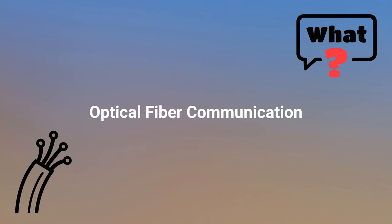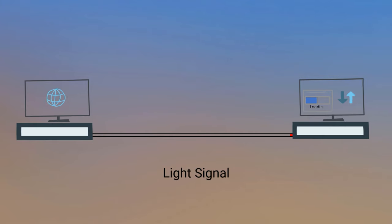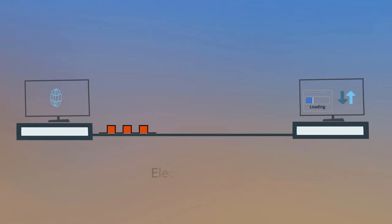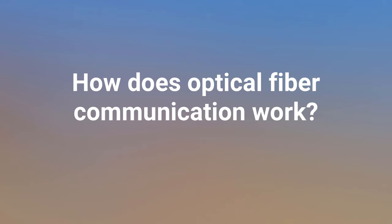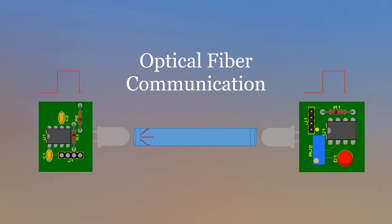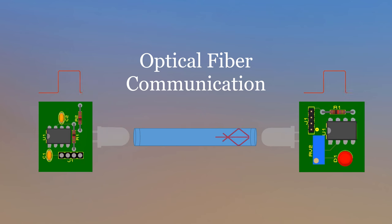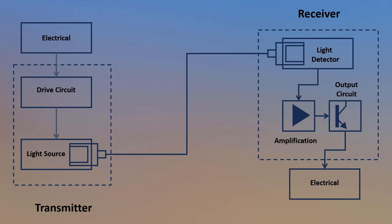Before we dive into the Arduino integration, let's briefly understand the fundamentals of fiber-optic communication. Optical fiber communication is a method of transmitting information using light signals instead of electrical signals. An optical fiber cable is used to transmit these light signals from one place to another. Optical fiber signals are transmitted using pulses of light, which are converted into electrical pulses inside an electronic device called a transmitter, and then converted back into light pulses inside another device called a receiver.